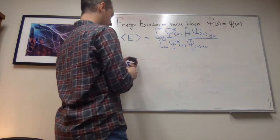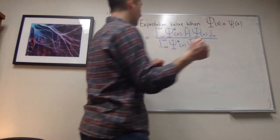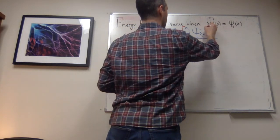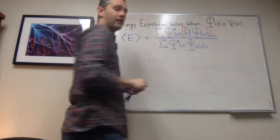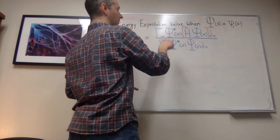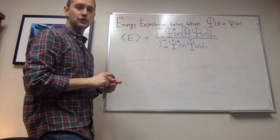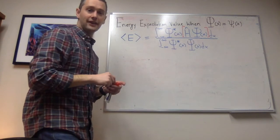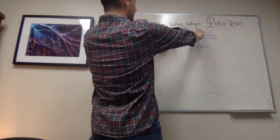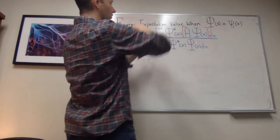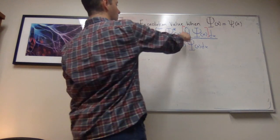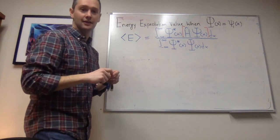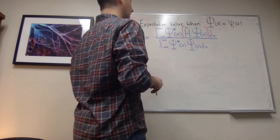In general, the numerator has two pieces: H-hat acting on psi(x), where H-hat acts to the right and produces some new function, and then that result is multiplied by psi-star(x). You get some new curve that you integrate over all space. So the question is: what does H-hat do to psi(x), and what does the result multiplied by psi-star(x) look like — what's the area under that curve?